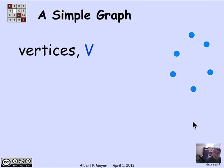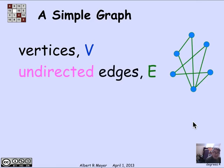Let's just draw a picture. Here's a case where there are six vertices V, shown in blue. And there are these undirected edges, shown in green. In this case, I see seven edges in E.